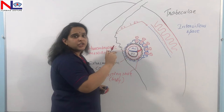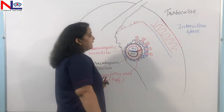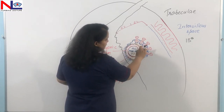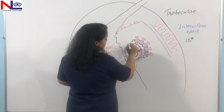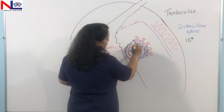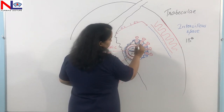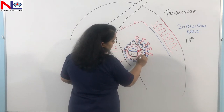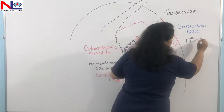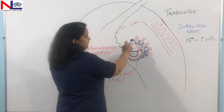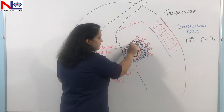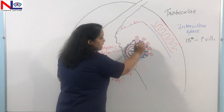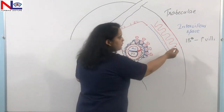Later on, the connecting stalk changes into the umbilical cord. Around day 13, the cytotrophoblastic layer enters into the villi. Primary villi are formed when the cytotrophoblastic layer projects into the syncytiotrophoblastic layer — the outer syncytiotrophoblast surrounds the inner cytotrophoblast, forming the primary villi.